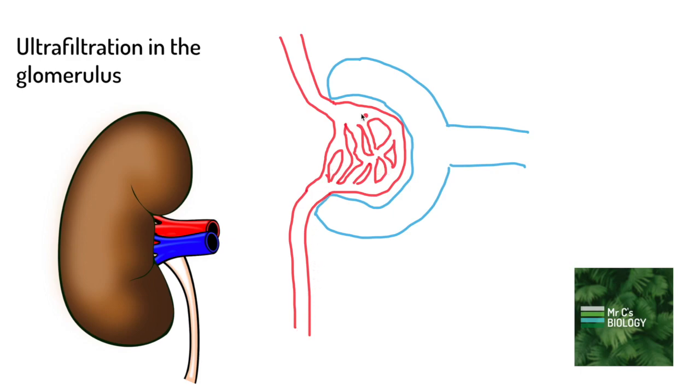Here we have in red the glomerulus. This is a network of capillaries that are going to be where the blood comes in to the kidney and then gets filtered out. The blood that's going out here is going to be blood that is minus everything that's been filtered out.